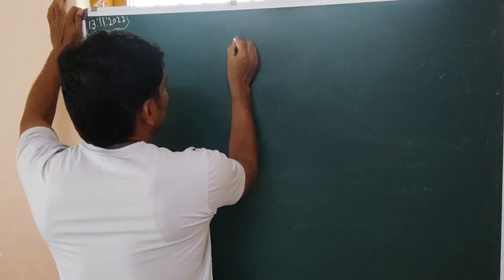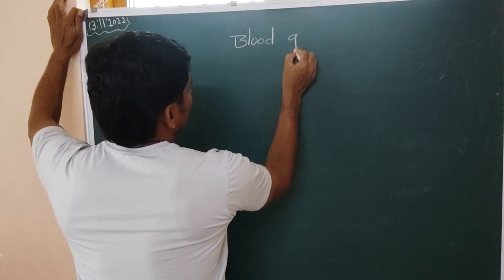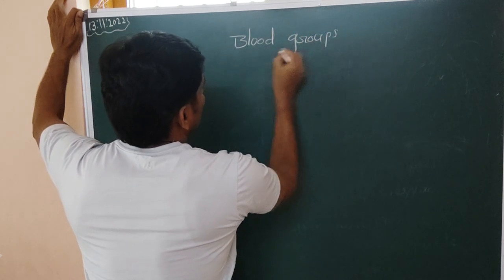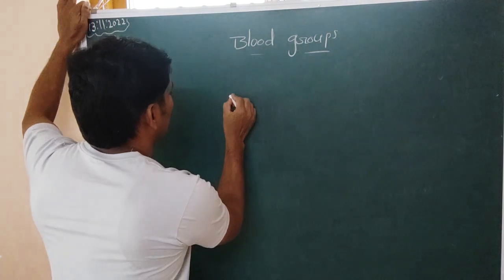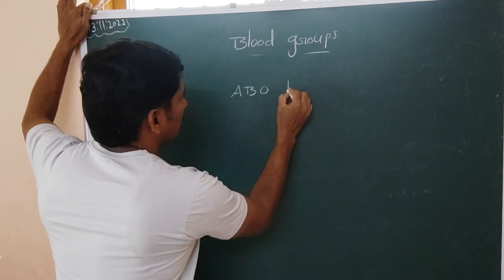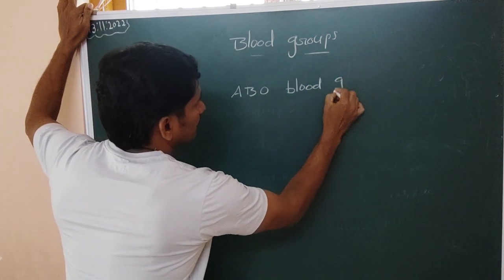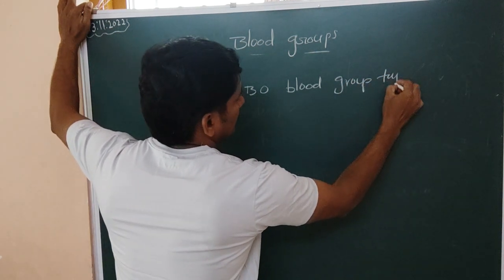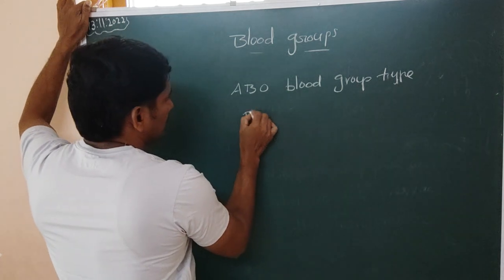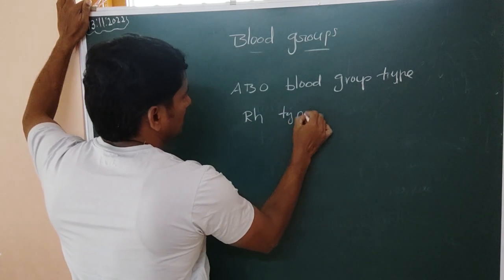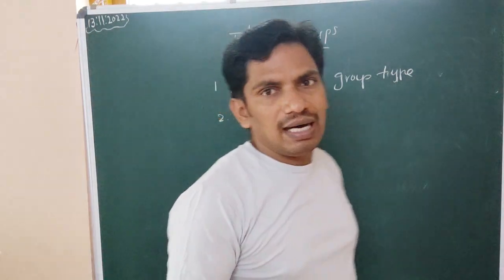For that, in human beings, blood groups are classified. The first blood grouping system is the ABO blood grouping type, and the second is the RH type of blood grouping. So one is ABO type and the other is RH type.